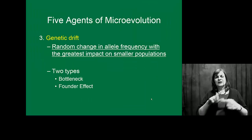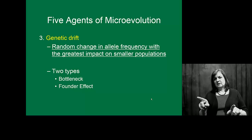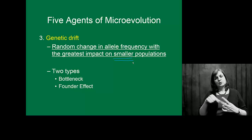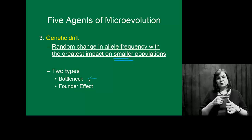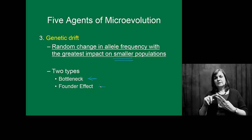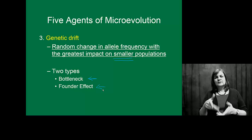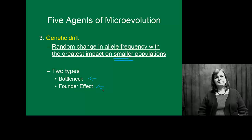Genetic drift is a little bit different. Genetic drift looks at impacts typically on small populations in particular. We've got two types of genetic drift: one is bottleneck, and one is founder effect. Many folks have trouble distinguishing the two of these, so let's take them one at a time.